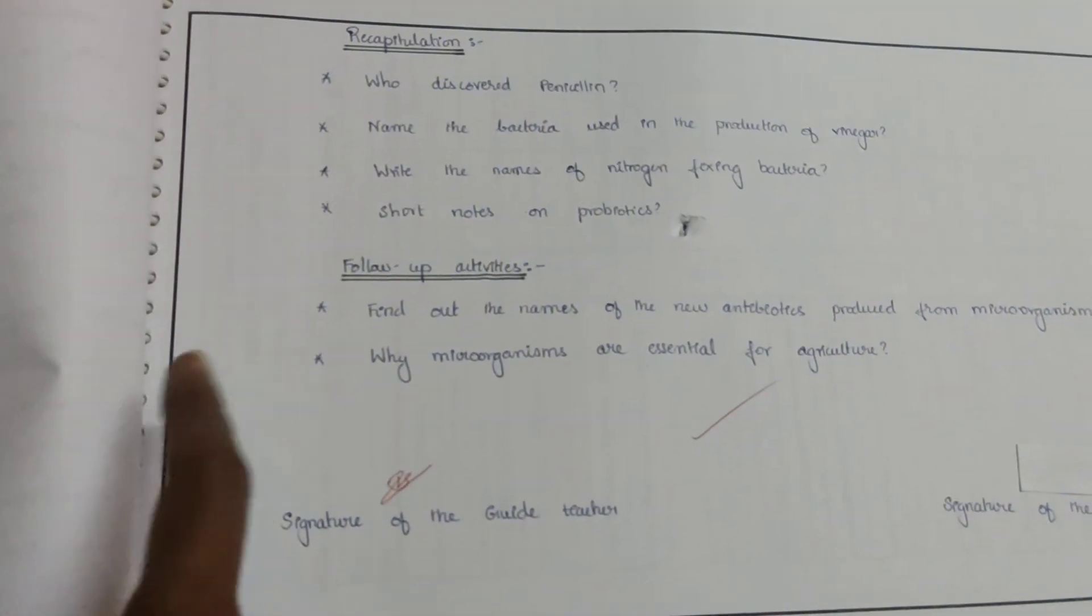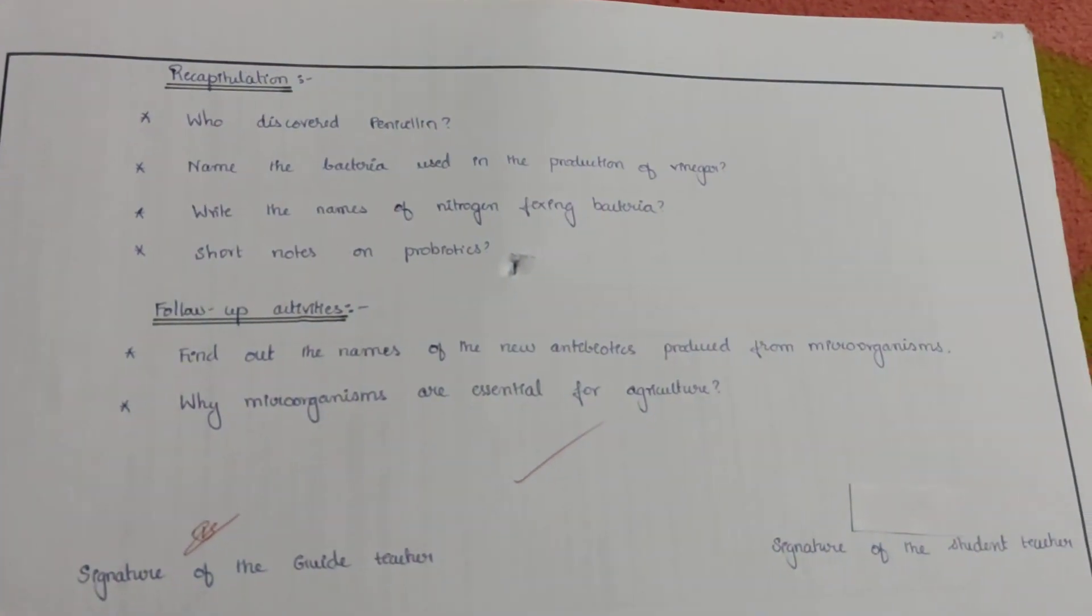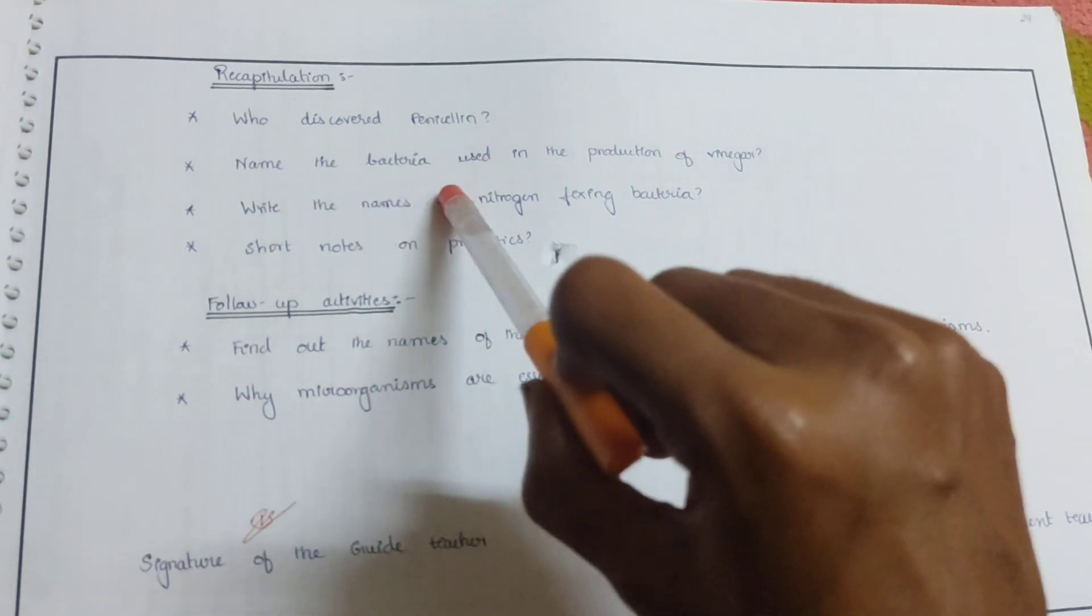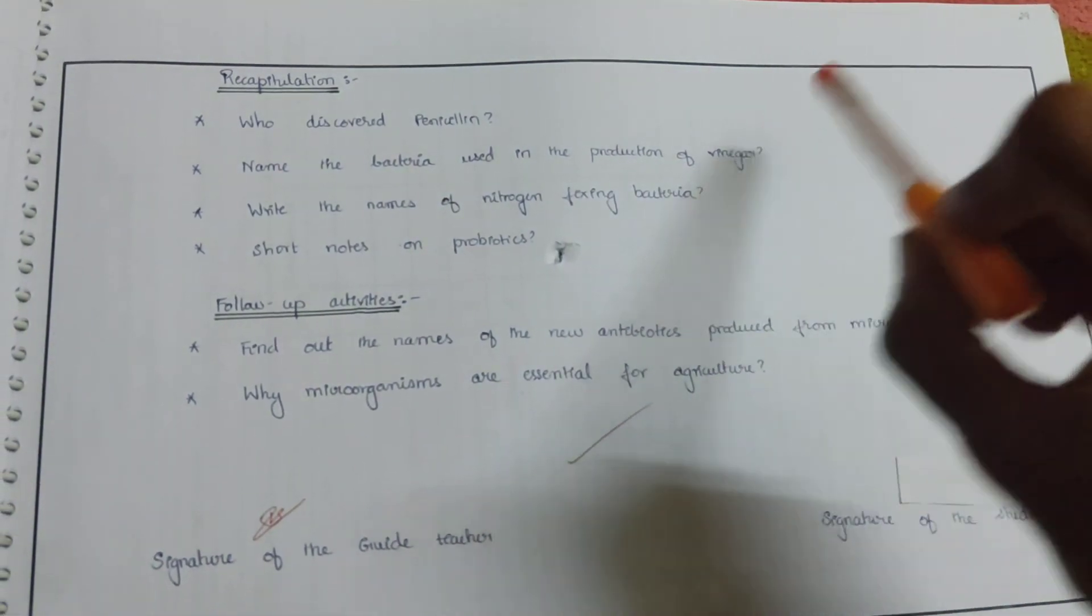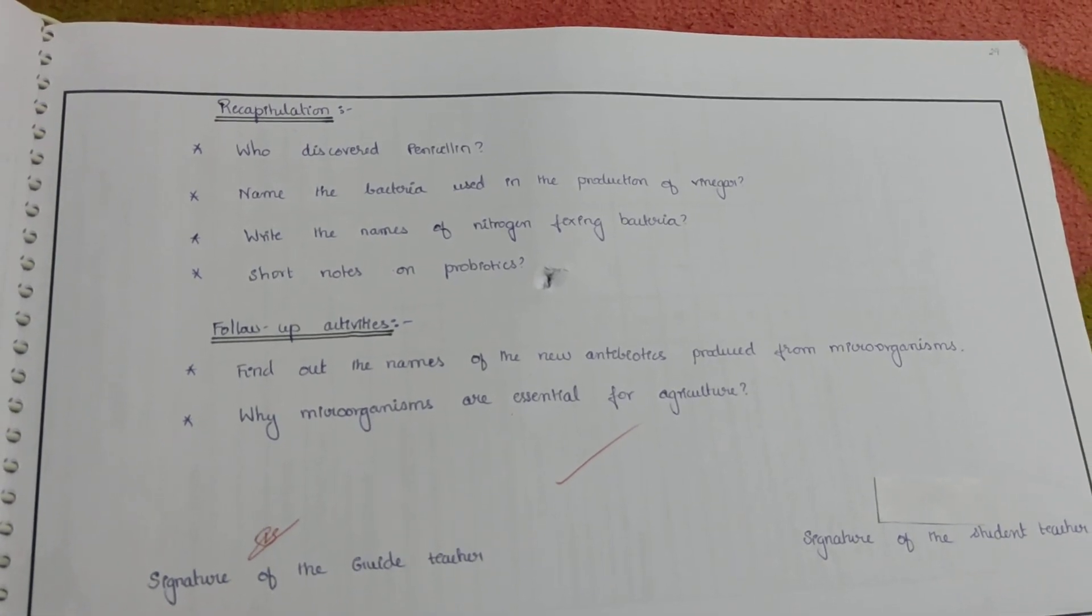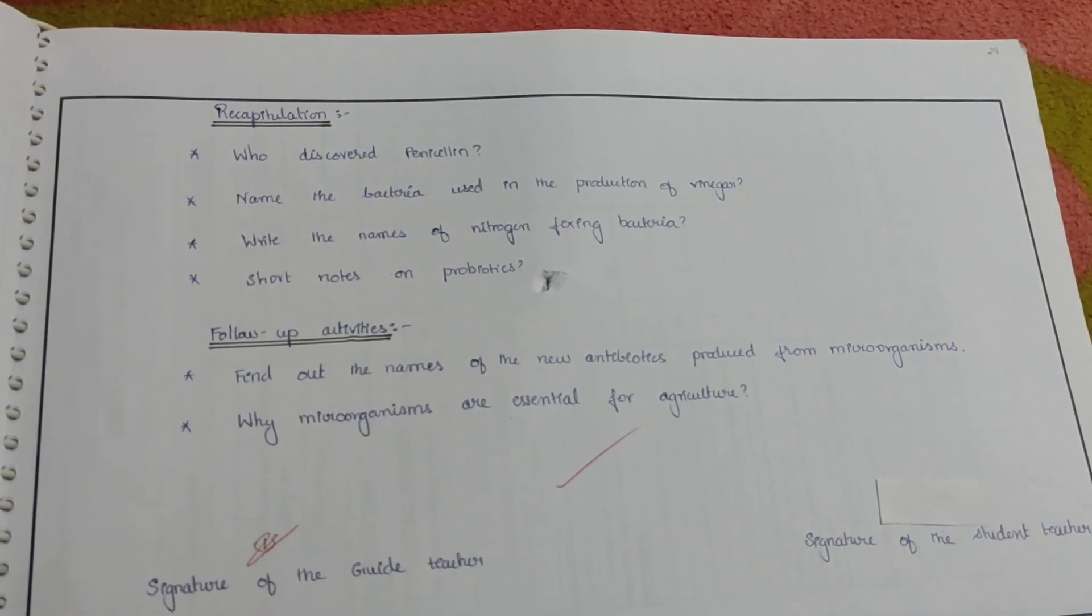Here comes the last page, recapitulation. Who discovered penicillin? Name the bacteria used in the production of vinegar. Write the names of nitrogen fixing bacteria. Short notes on probiotics.